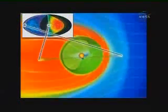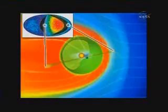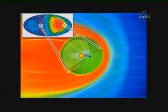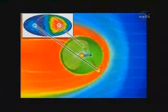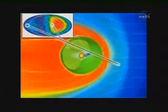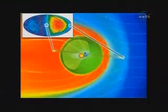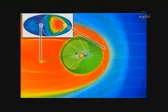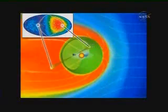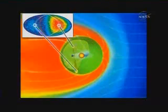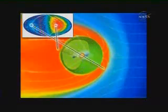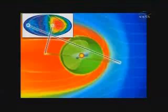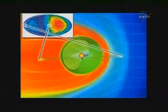As we repoint the spacecraft, the swath of sky that we observe rotates around. Over the course of half a year, by the spinning of the spacecraft and the repointing of the spacecraft, we end up observing all directions in space.